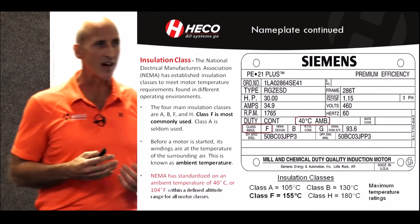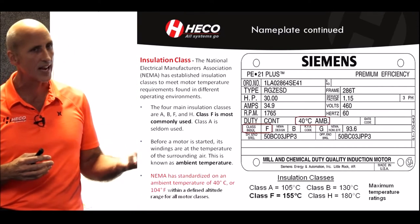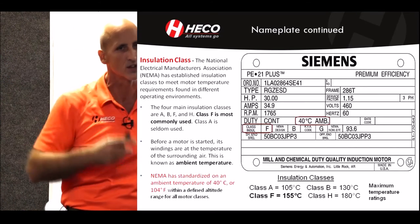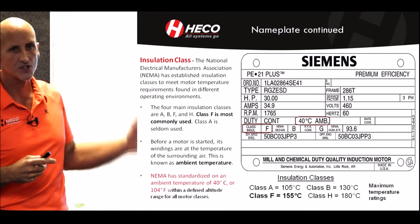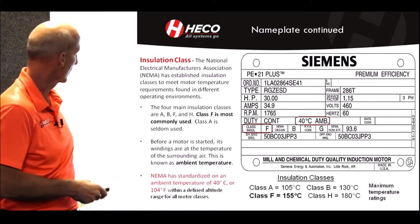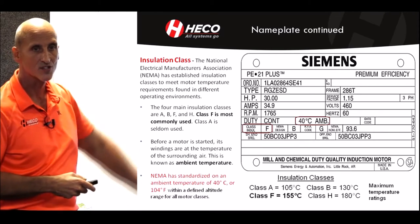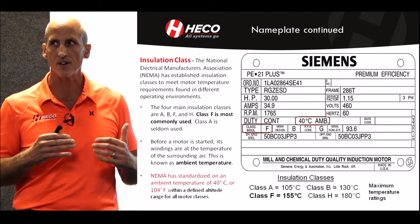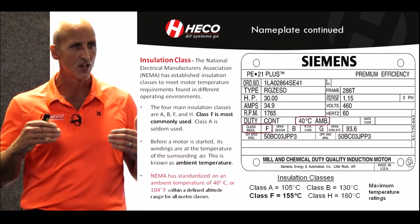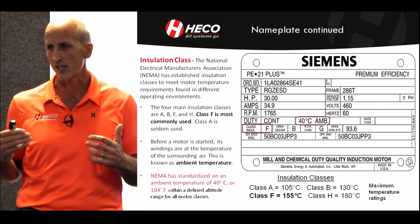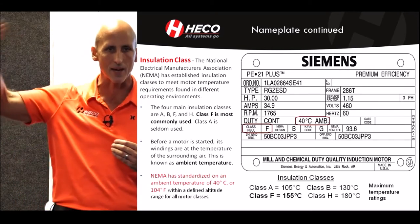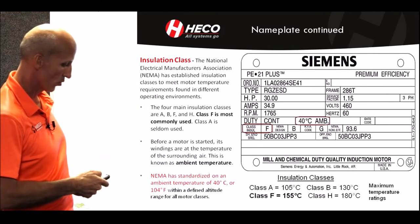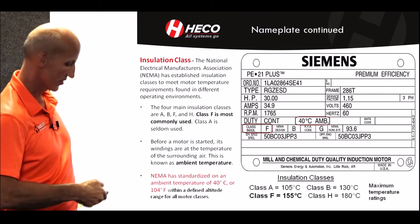Insulation class: NEMA defines the insulation classes A, B, F, and H. Class A isn't used anymore; class B really isn't used much either—you still see those machines out there. It's typically F and H today. NEMA also defines the ambient, and in the United States we define the hottest ambient to be 40 degrees C. The motor temperature rise is added above that. It's a way of defining it and also designing a motor around the insulation system.